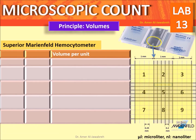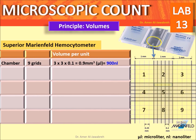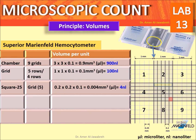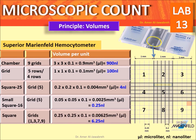Principle volumes for the Superior Marine Field hemocytometer: each chamber consists of 9 grids with a total volume of 900 nanoliters. Each of the 9 grids has a volume of 100 nanoliters. Each of the 25 squares in grid 5 has a volume of 4 nanoliters. Each of the 16 smaller squares in grid 5 has a volume of 0.25 nanoliters.